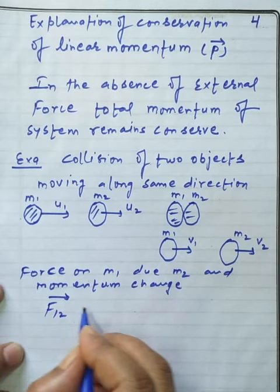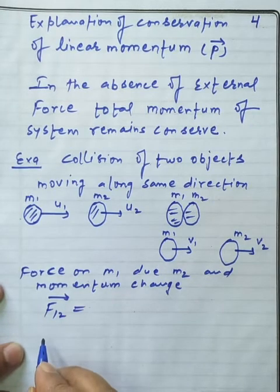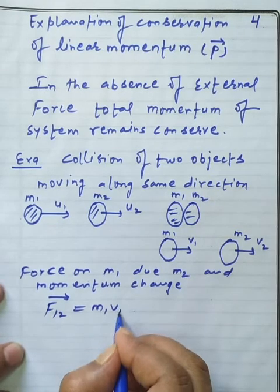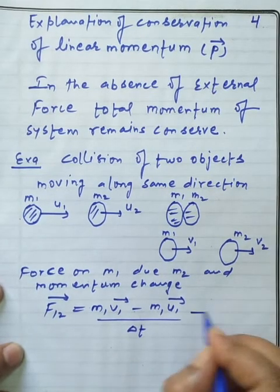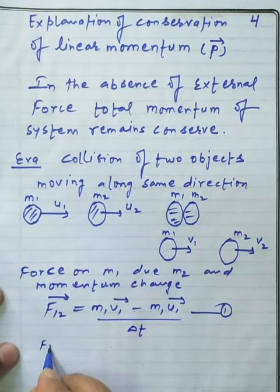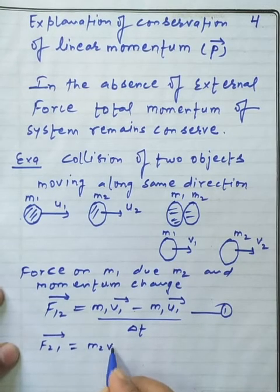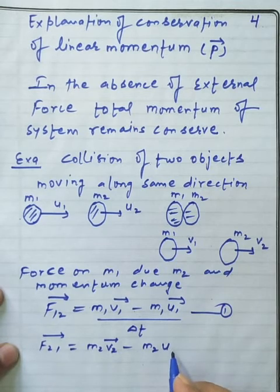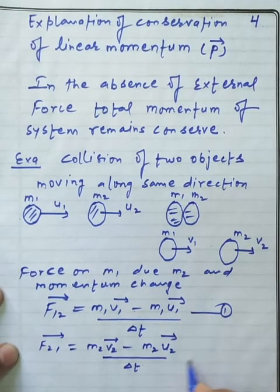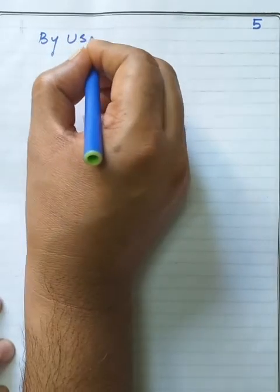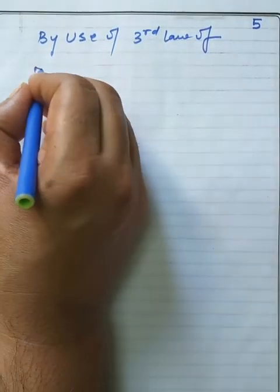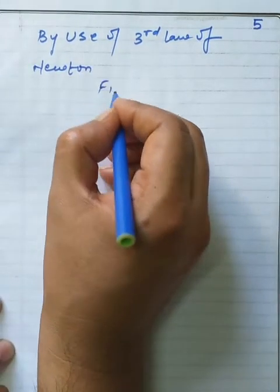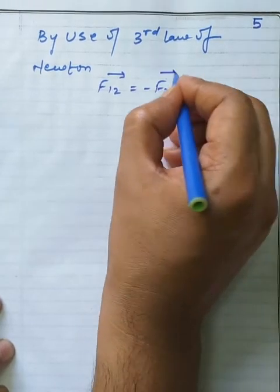By derivation using Newton's second law: force on M1 due to M2 equals the change in momentum (M1V1 − M1U1) divided by the small time interval ΔT — this is equation 1. Similarly, force on M2 due to M1 gives (M2V2 − M2U2) divided by ΔT — this is equation 2. By Newton's third law, for every action there is an equal and opposite reaction — this is equation 3.